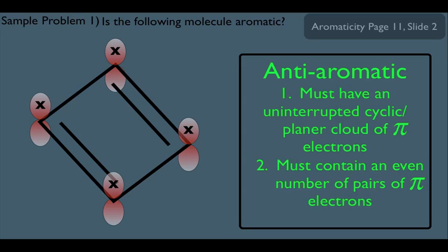Notice that's the difference. Aromatic was odd pairs. This one is even pairs. So that's how we determine if a molecule is anti-aromatic.